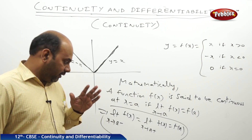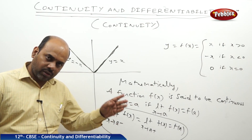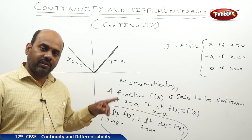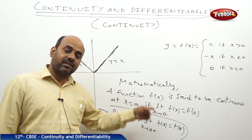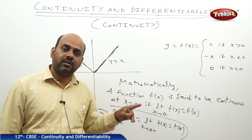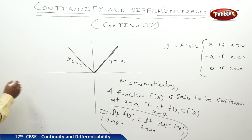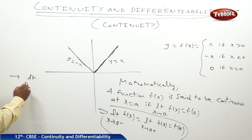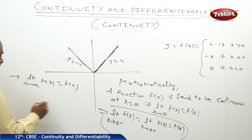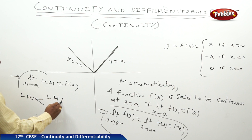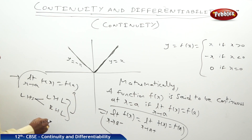One thing you should remember: if the left-hand limit is not equal to the right-hand limit, then also we can tell the function is not continuous. If the limit is existing but it is not equal to the value of the function, then also the function is not continuous. So, to show a function is continuous, we need to show that limit x→a of f(x) equals f(a), meaning left-hand limit equals right-hand limit and both equal f(a).